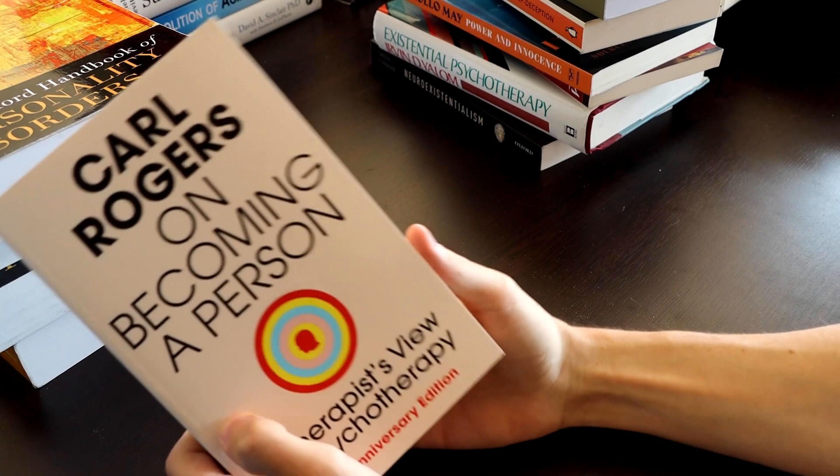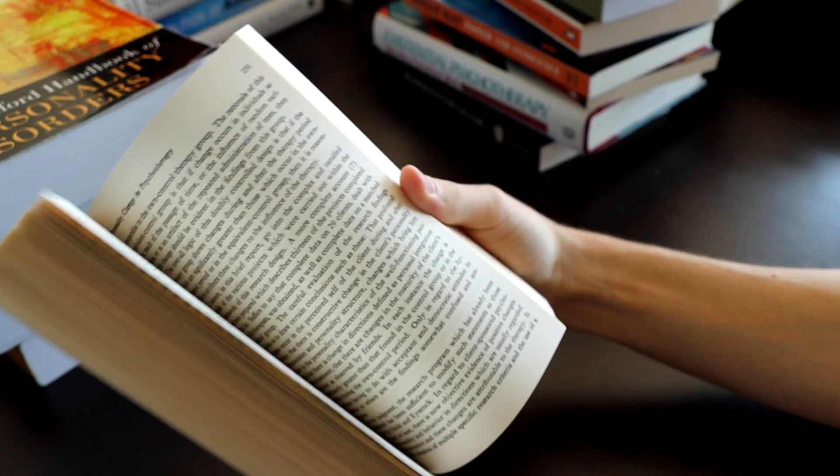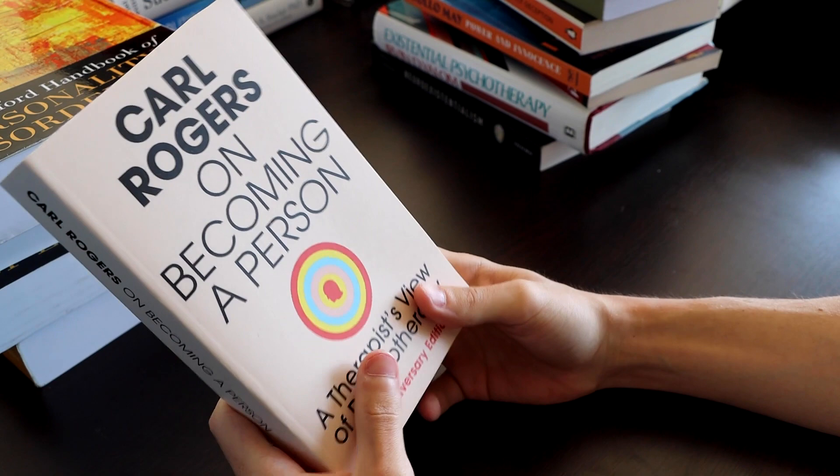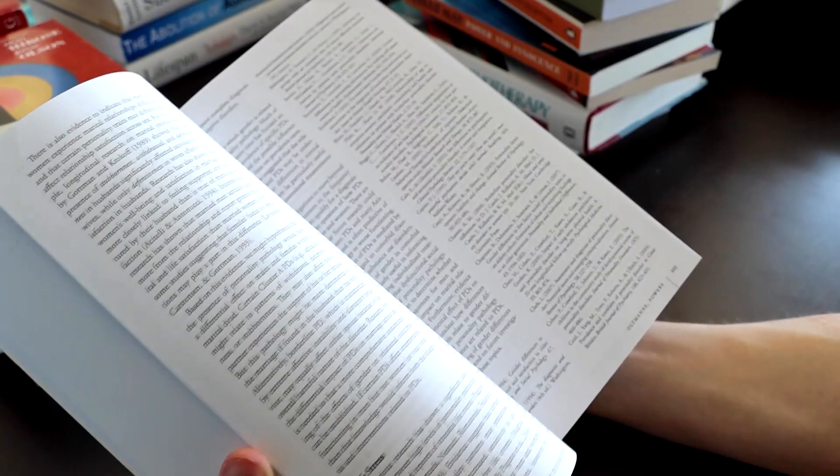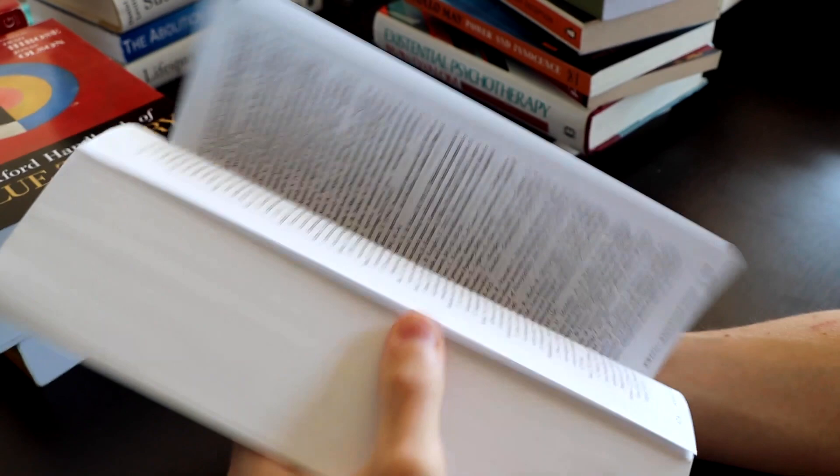On Becoming a Person, Carl Rogers. I was going to read this with another bookstagrammer, but I just didn't have the time. And now I'm going to read it as a way to write about personhood, about the stages of becoming a person, and maybe when you have a personality issue when you're becoming a person. That's why I'm going to read this book. I use this book as a research book, but now I want to read the whole thing from cover to cover.